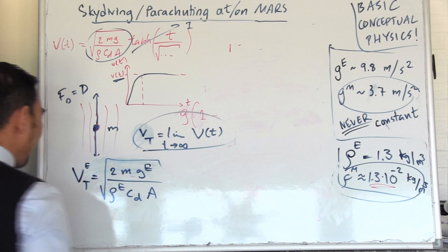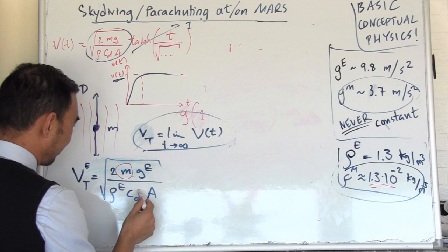2mg, and I would write it like this for Earth: ge, rho e, CD A. We're going to see that once you actually modify the equation for planet Mars, it will be about six times faster than the terminal speed on Earth, no matter your mass and all that and the form.